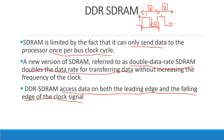On the leading edge, we send one data transfer. Then on the falling edge, we send another data transfer. So each clock cycle carries two data transfers instead of one.